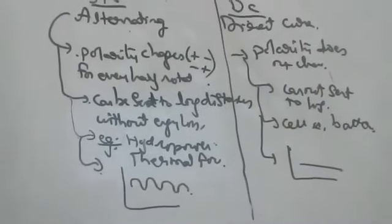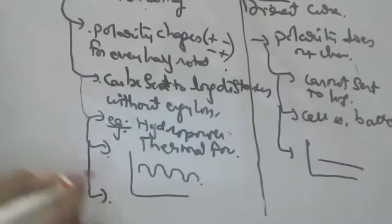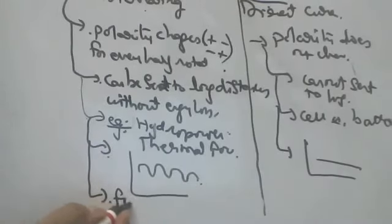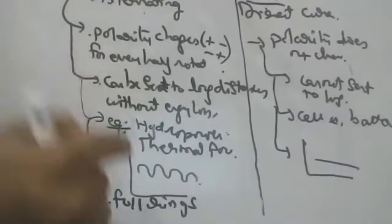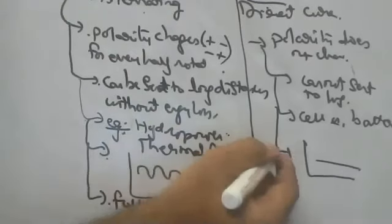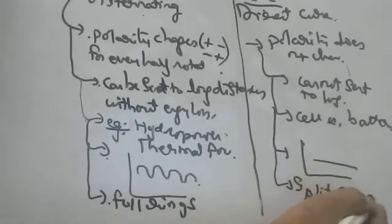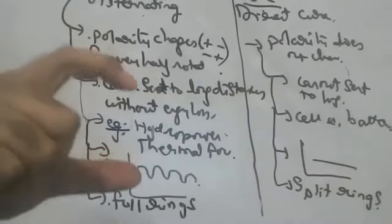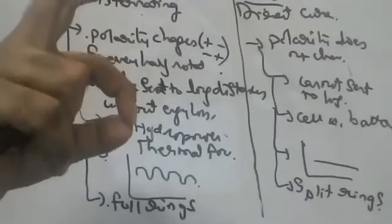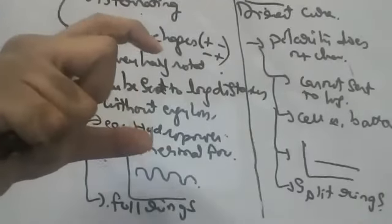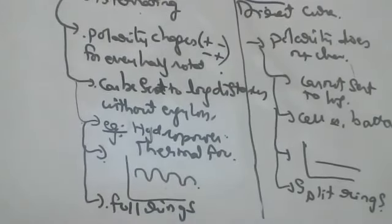One more important difference: in AC we use full rings. In your textbook figure there are two full rings. In DC we use split rings — split rings means half moon shape, semicircular rings. So AC uses full rings and DC uses split rings.